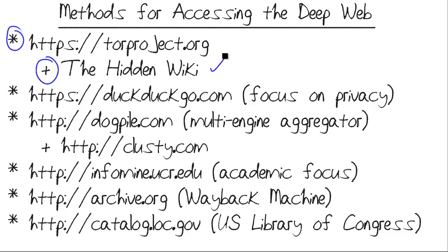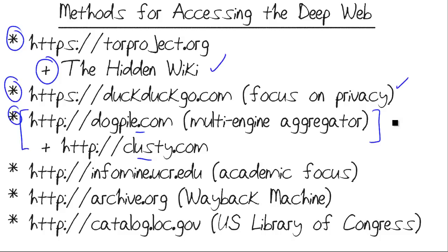As for websites you can access right now: DuckDuckGo is an alternative to Google where you can find interesting results that aren't picked up by Google and Bing — its focus is on not tracking you and protecting your privacy. Dogpile and Clusty are what are called multi-engine aggregators. Even relying on search engines, you might find something interesting, and by using URL manipulation you might find hidden resources.